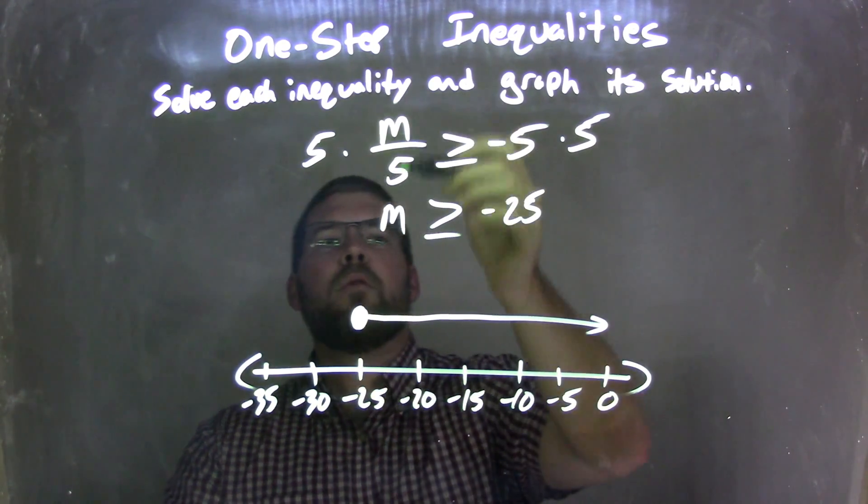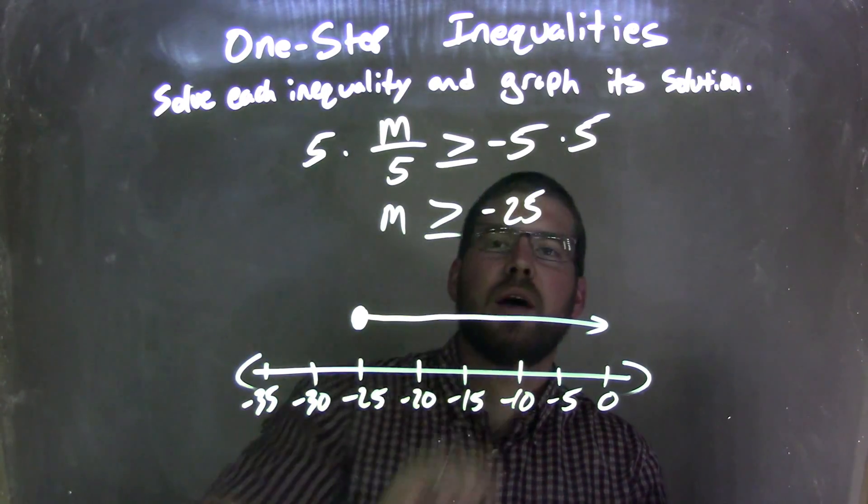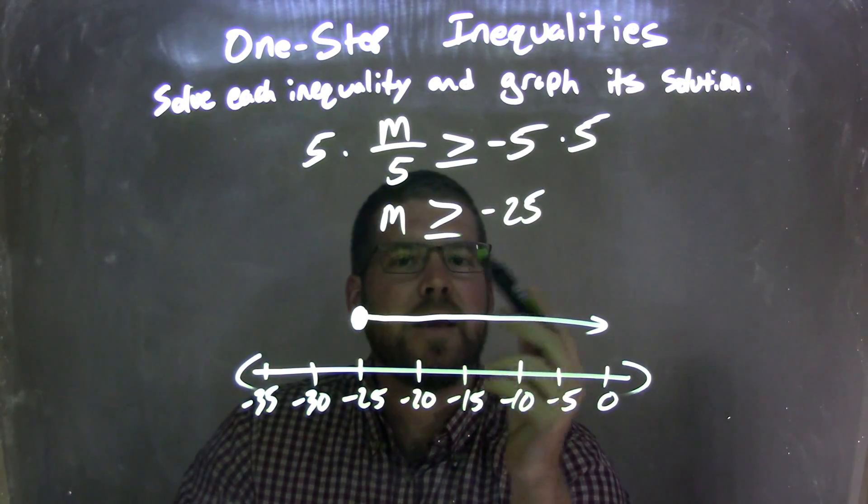So as a recap, we're given m over 5 is greater than or equal to negative 5. To isolate m, I multiply 5 to both sides, leaving me with m is greater than or equal to negative 25.